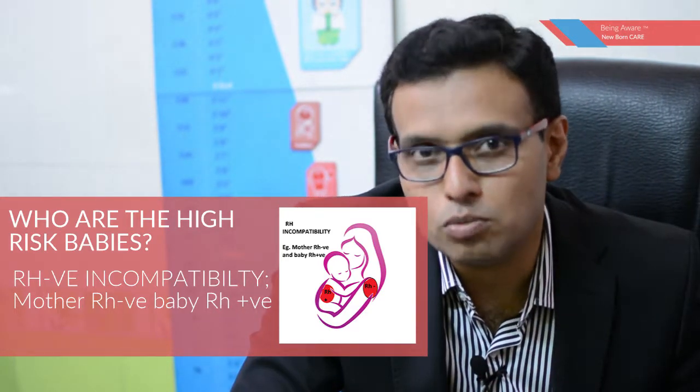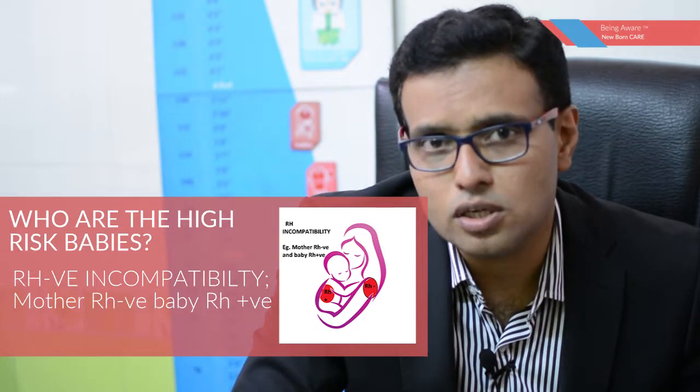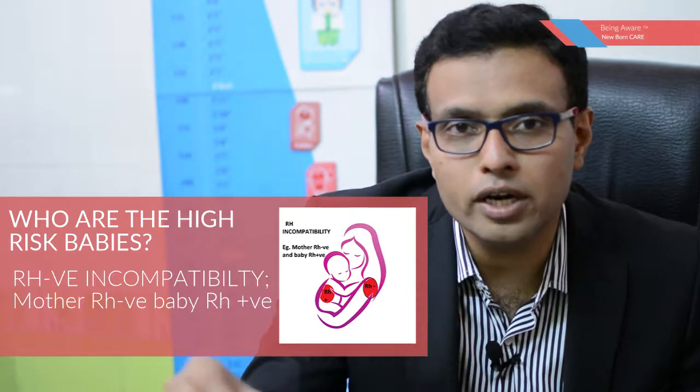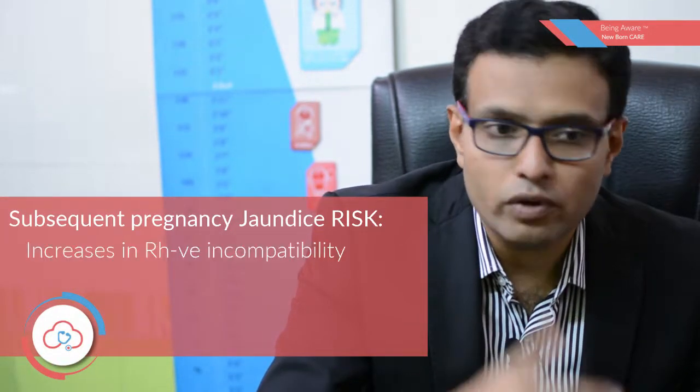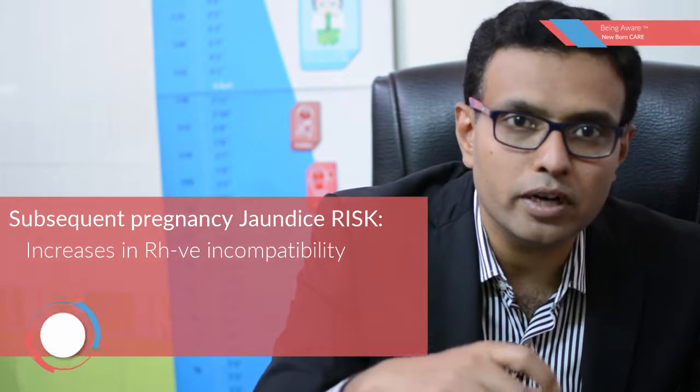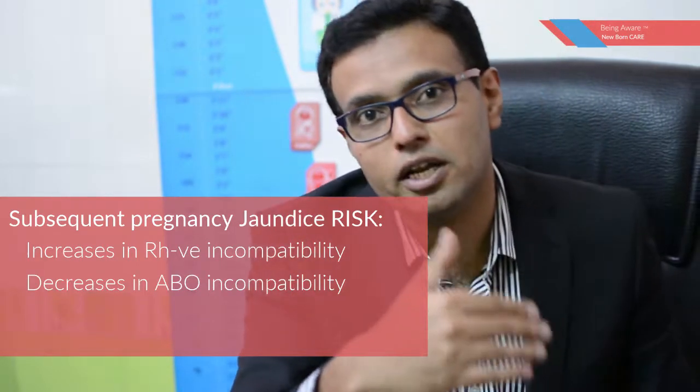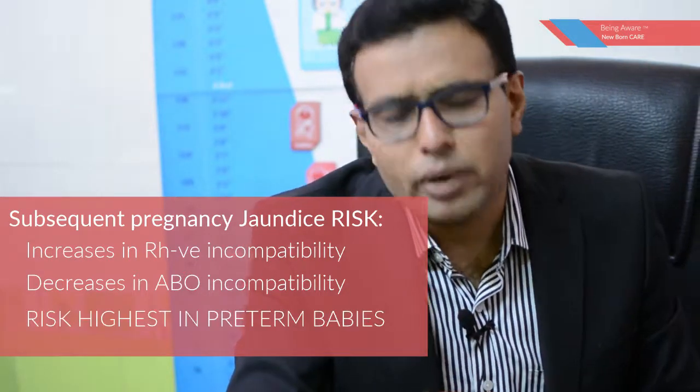In Rh incompatibility, we can anticipate the severity of jaundice even before the baby is born. For Rh-negative mothers, the first pregnancy carries less risk — as the gravida increases (second, third time), the jaundice levels become much more intense. With ABO incompatibility, it is the opposite: first-time pregnant mothers have the most severe jaundice, and the intensity comes down with subsequent pregnancies.